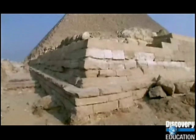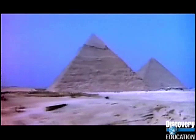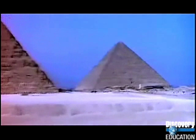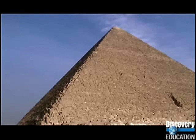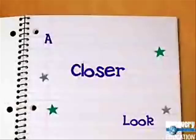King Sneferu designed the more familiar shape, square at the base with triangular sides that come together at a point. Its ancient name was the Shining Pyramid because its white stone shimmered in the sun. Two of Sneferu's sons, Khufu and Khafre, built the world's largest pyramids on the Giza Plateau near modern-day Cairo. The Great Pyramid of Khufu, built in 2680 BC, was named one of the Seven Wonders of the World and is the largest pyramid ever built.